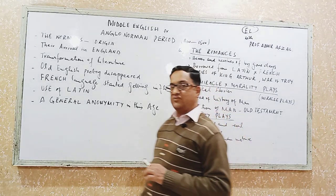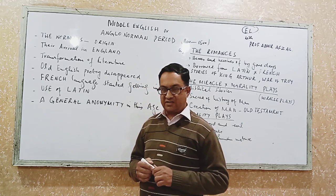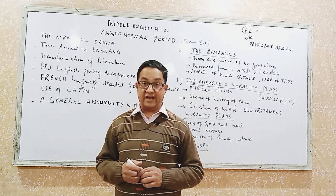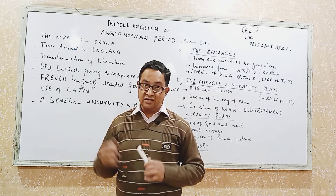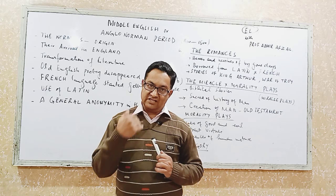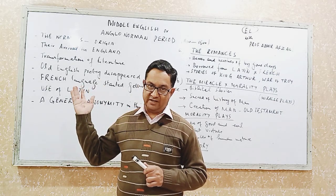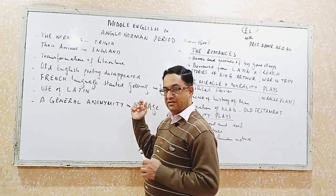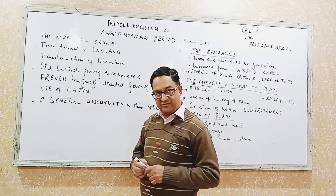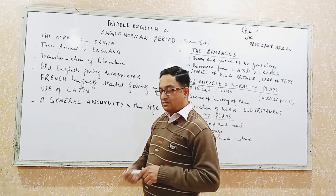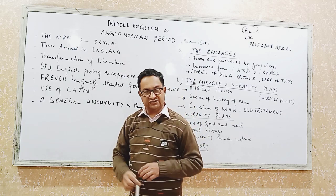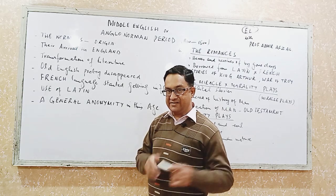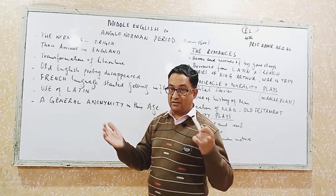The Anglo-Saxon period, as we studied last time, was quite the very beginning period — the beginning of the development of language as well as literature. When it developed into the second phase, it became the Anglo-Norman period. Just like the Angles and Saxon tribes, the Normans were also a tribe. They migrated from Normandy, France to England and defeated the Anglo-Saxon tribes.